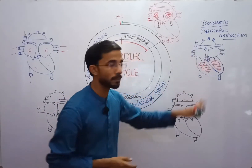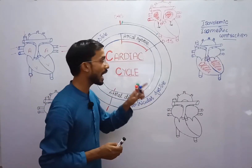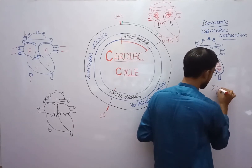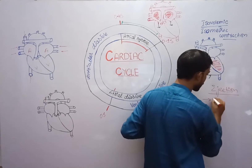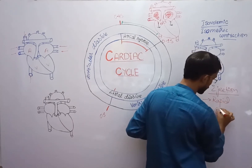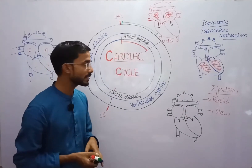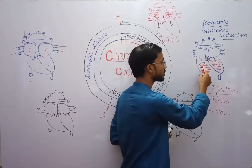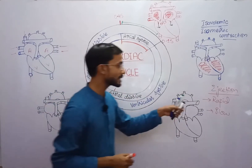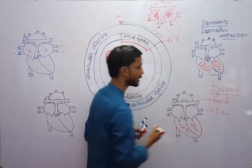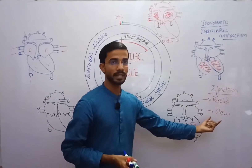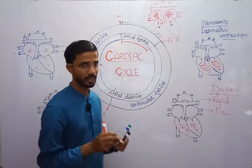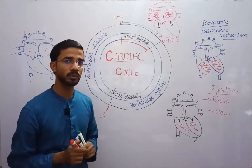This condition is called isovolemic or isometric contraction. After that, there is another phase called the ejection phase, which has two parts: a rapid phase and a slow phase. First, the ventricle contracts rapidly and blood moves from the ventricle into the pulmonary trunk or aorta. In the slow phase, the ventricle contracts again and the remaining blood moves into the pulmonary trunk and aorta, though some blood remains in the ventricle.